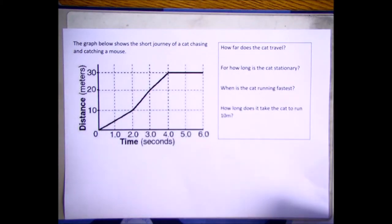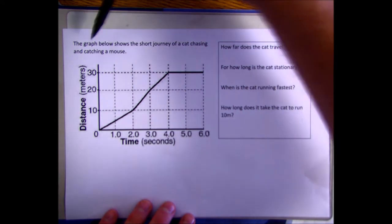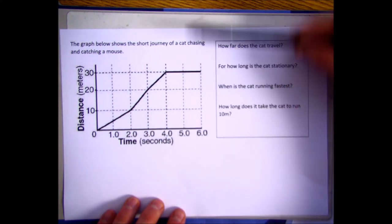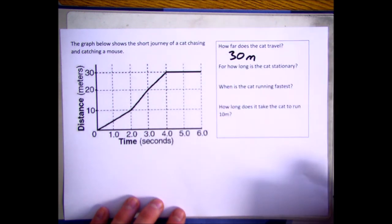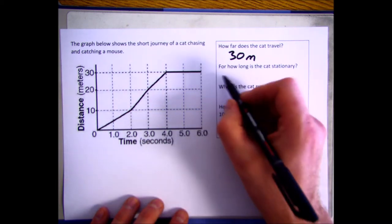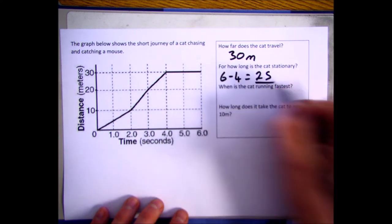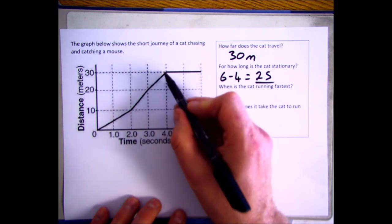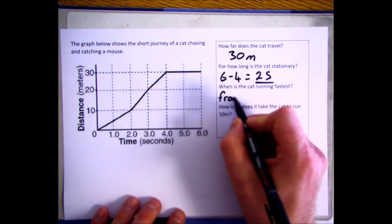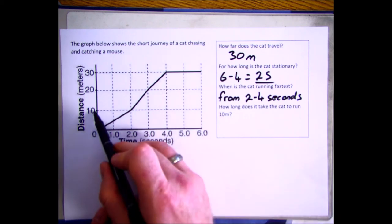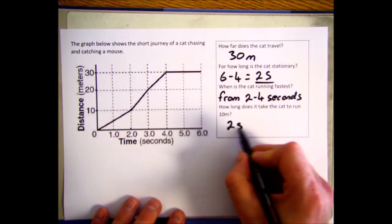Let's look at some questions they could ask you. Here we have a simple distance-time graph showing a short journey of a cat chasing a mouse. First question: how far does the cat travel? The furthest distance is 30 metres. For how long is the cat stationary? Between four and six seconds — so stationary for two seconds. When is the cat running the fastest? The steeper the line, the faster the speed, so between two and four seconds. How long does it take the cat to run 10 metres? Looking at where 10 metres is on the graph, that took two seconds.